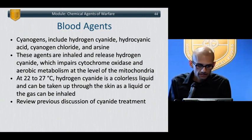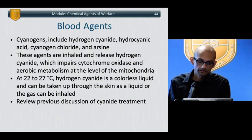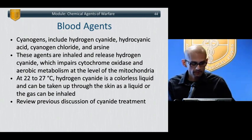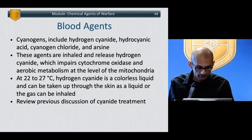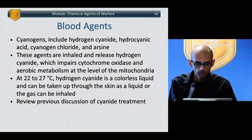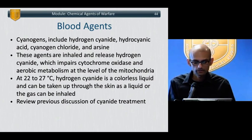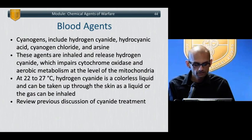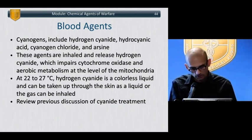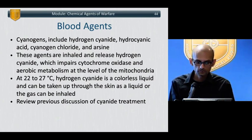Blood agents are cyanogens — hydrogen cyanide, potassium cyanide — with very high mortality if untreated. As discussed in the cyanide poisoning section, these agents poison the mitochondria and stop oxidative phosphorylation, creating an anaerobic mode of respiration and predisposing to lactic acidosis. Treatment refers back to the cyanide poisoning protocol.